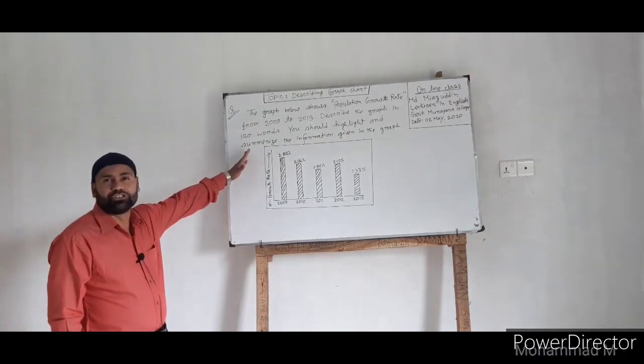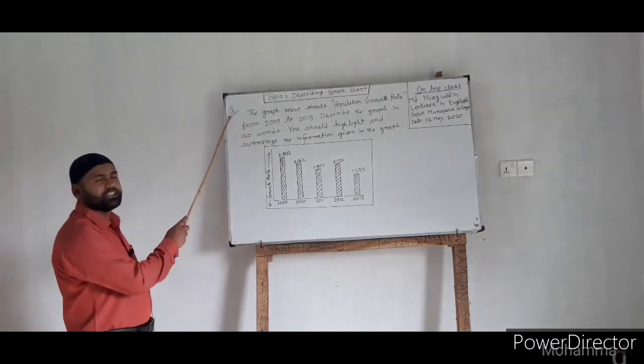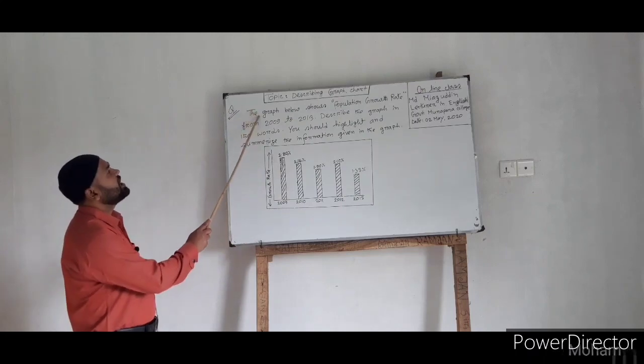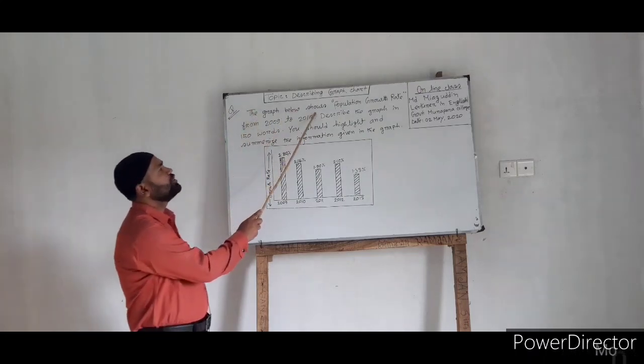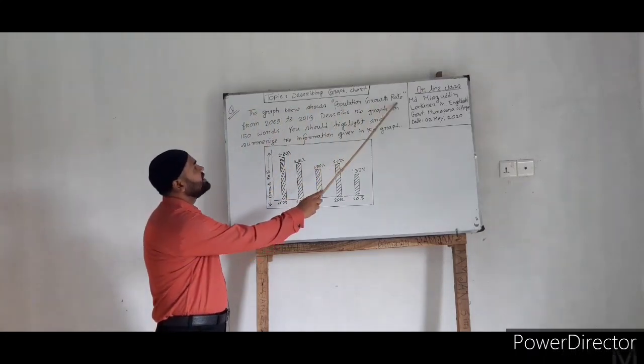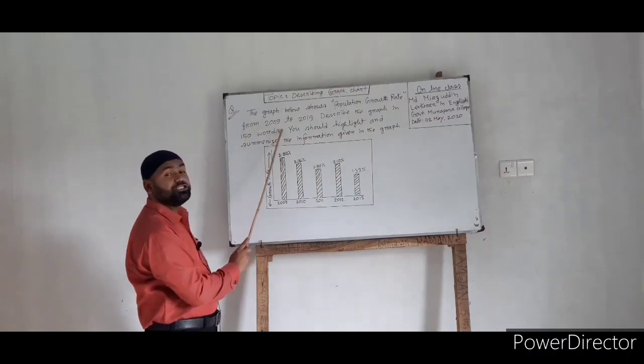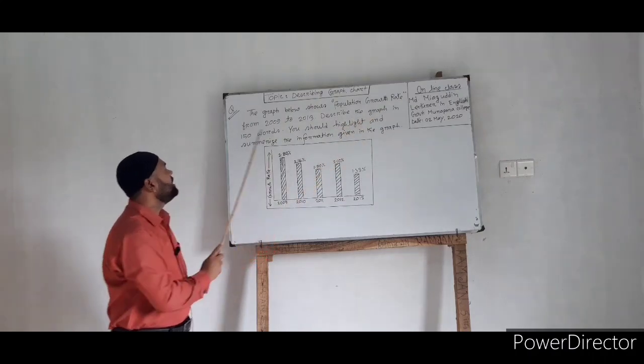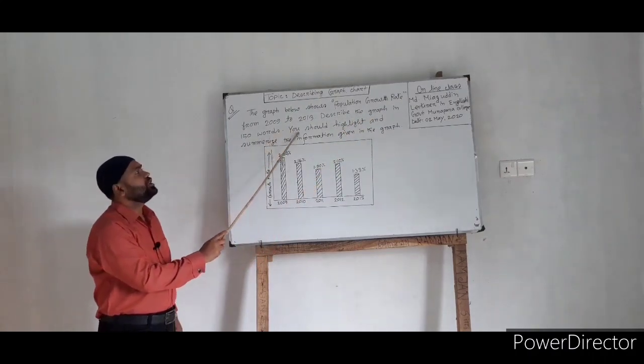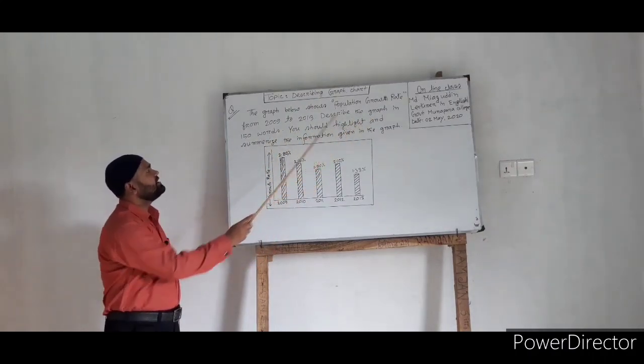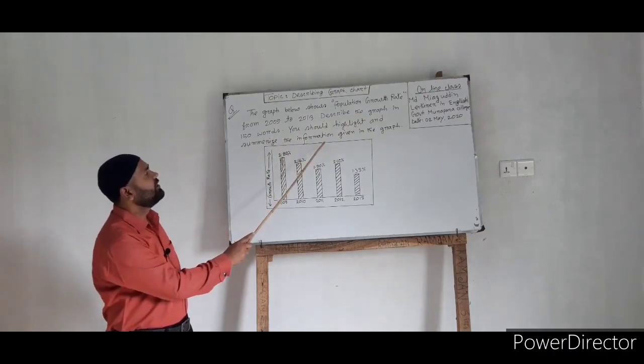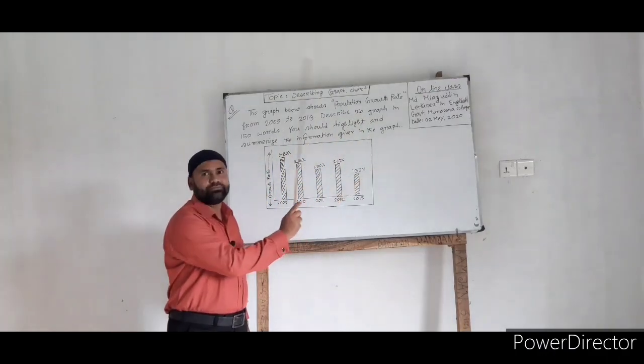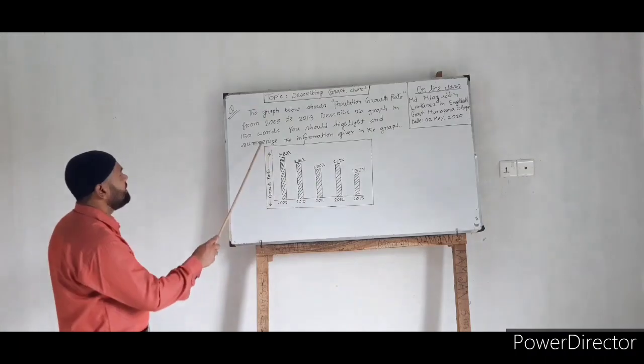Now follow the board. Here is the question: The graph below shows population growth rate from 2009 to 2013. Describe the graph in 150 words. You should highlight and summarize the information given in the graph. Here is the diagram.